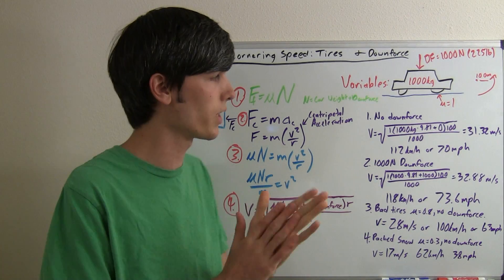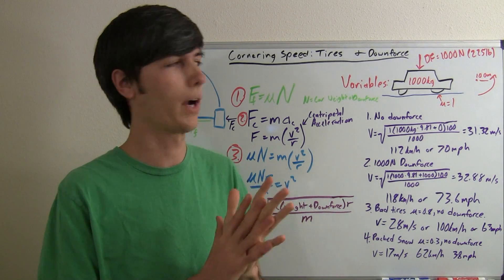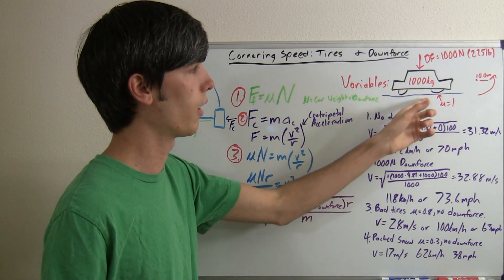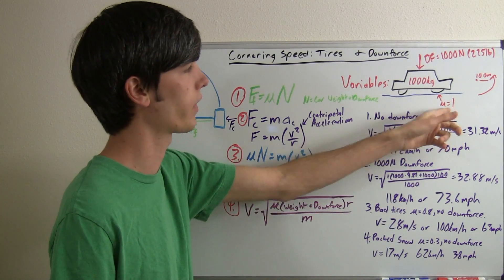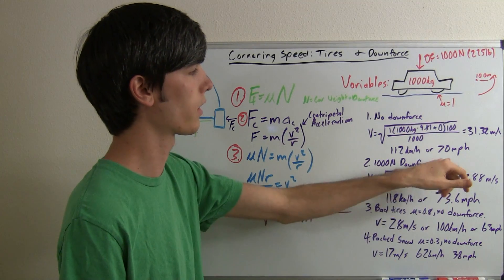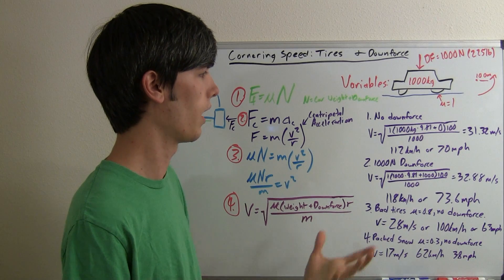That's about 112 kilometers an hour, or about 70 miles per hour. So that's the maximum speed that this vehicle could go around a corner with these tires, which are pretty good tires if they've got a coefficient of friction of about one going around this corner. It could go at 70 miles per hour around this corner.